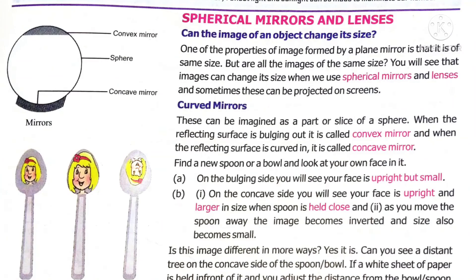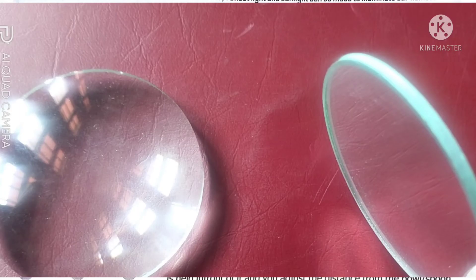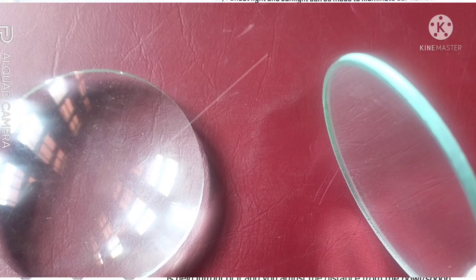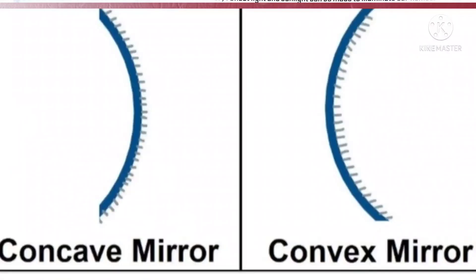What is the difference between a spherical mirror and a lens? In a mirror, there is only one reflective surface, whereas in lenses both sides are refracting surfaces. There are two types of mirrors: convex mirror and concave mirror. We also studied about plane mirror.